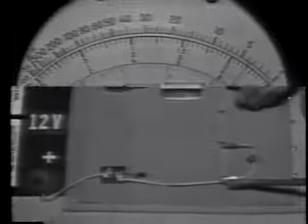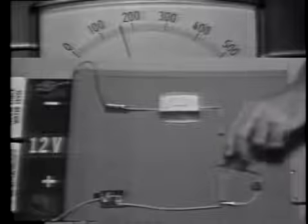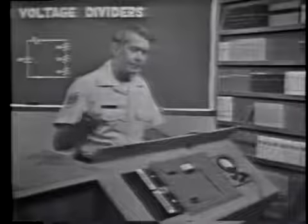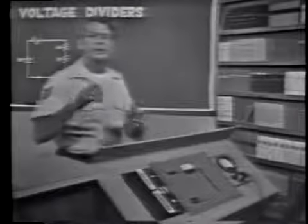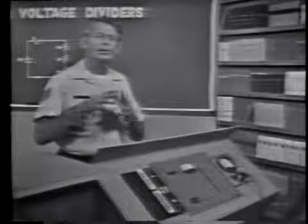If total resistance decreases, current in the circuit must increase. Let me remove the ohmmeter and the load device and apply power. This is total current with the circuit unloaded. When I connect the load device, total current increases. The voltage in the divider changes due to a decrease in total resistance and a corresponding increase in total current.